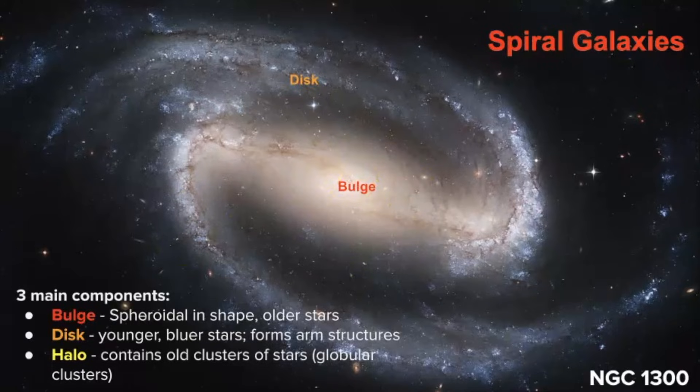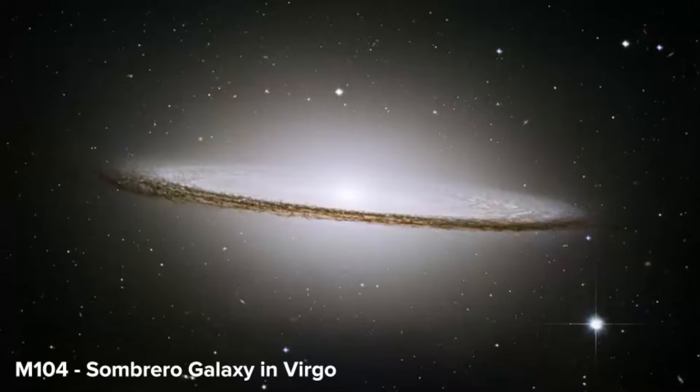You're not observing the halo in this photograph so I found this one of M104, it's called the Sombrero Galaxy in Virgo, and this area here would be classified as the halo. Here we could see the galactic center and then the disc-like arms.